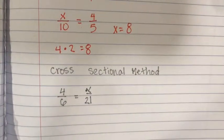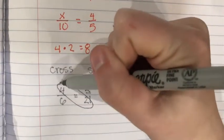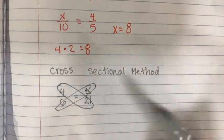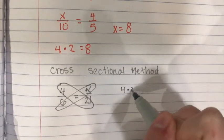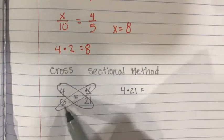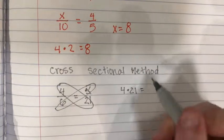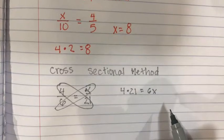In the cross sectional method we are multiplying 4 by 21 and 6 by x. This will go off to one side and this will go off on the other side. So 4 times 21 equals 6x.